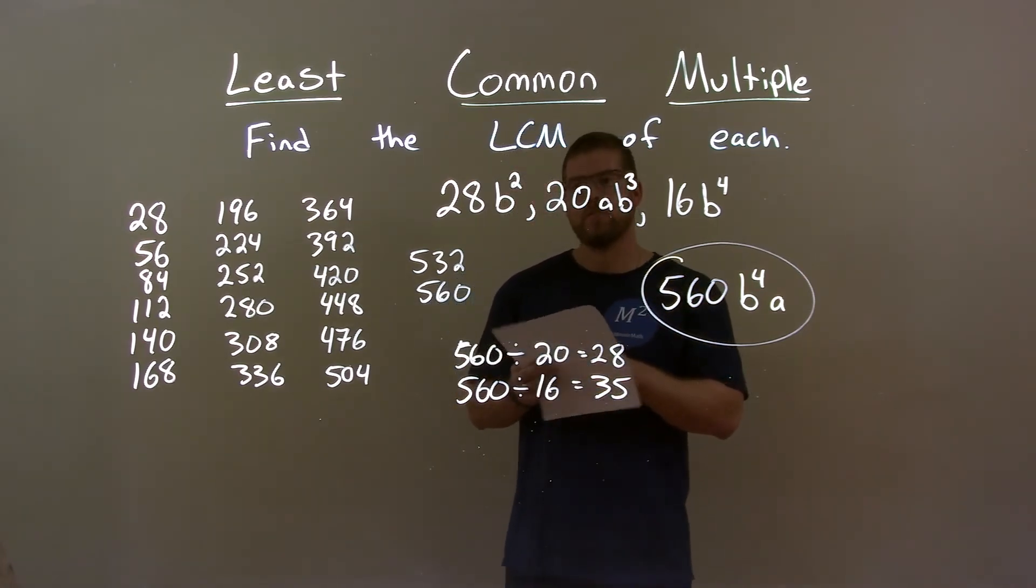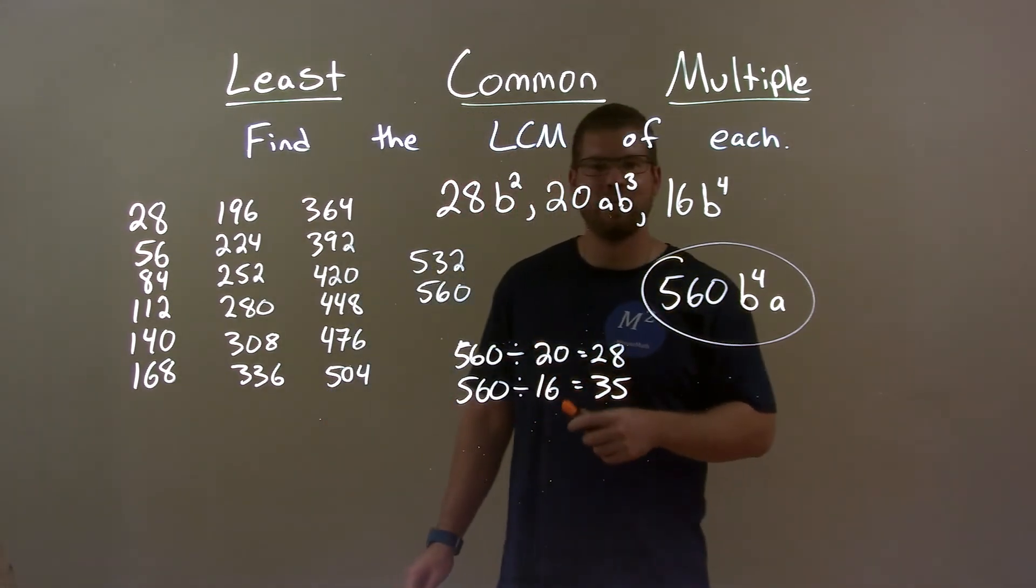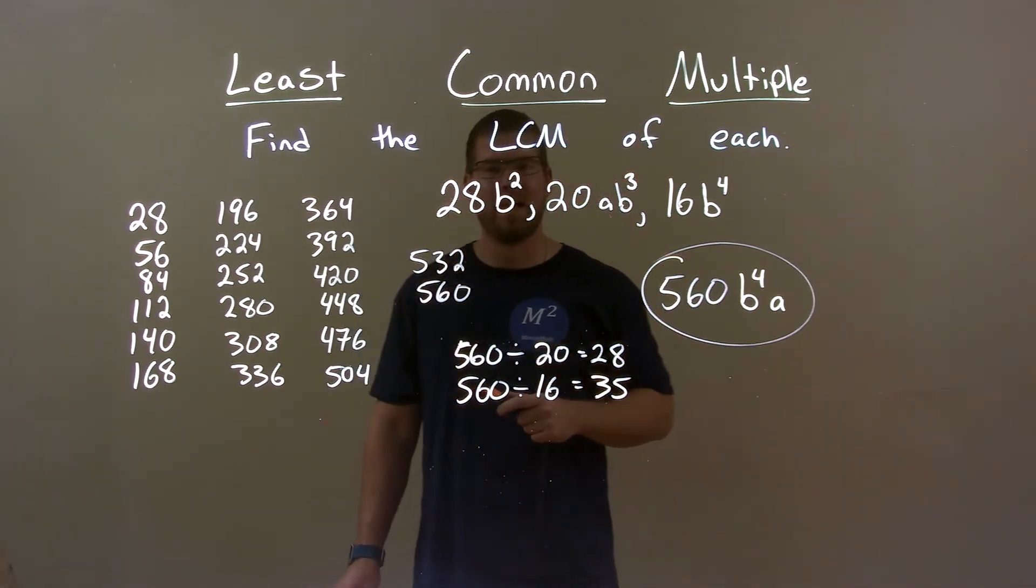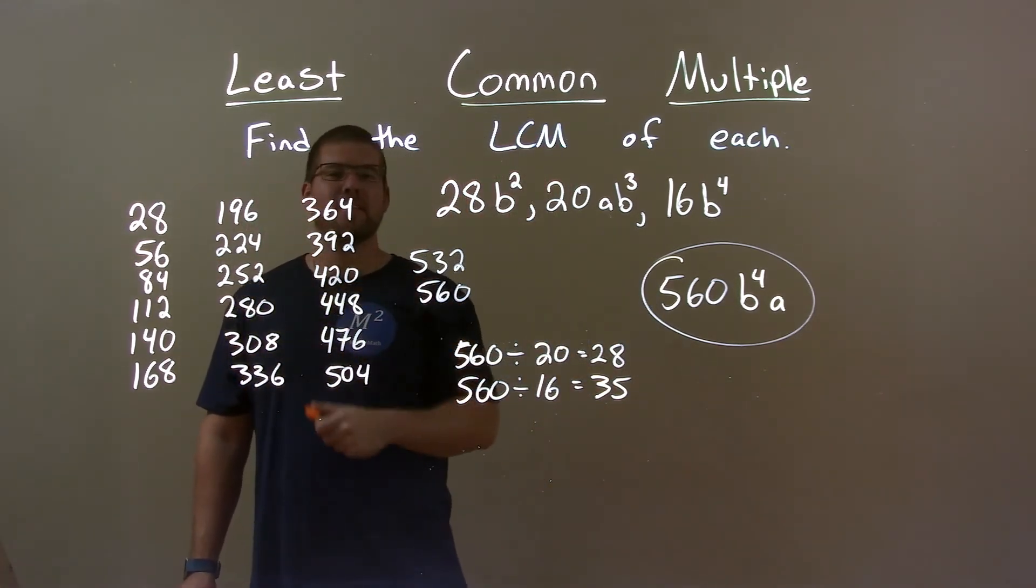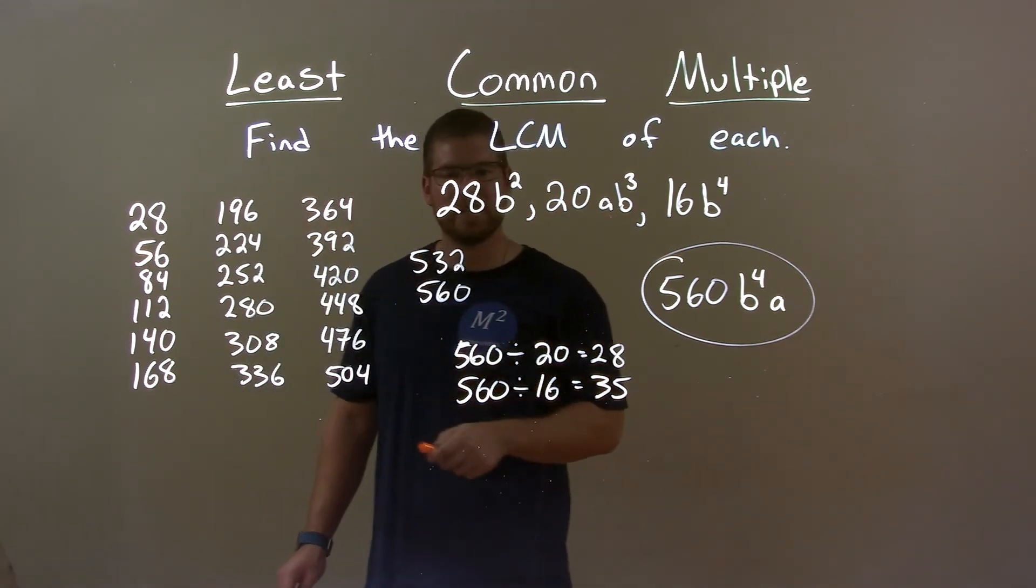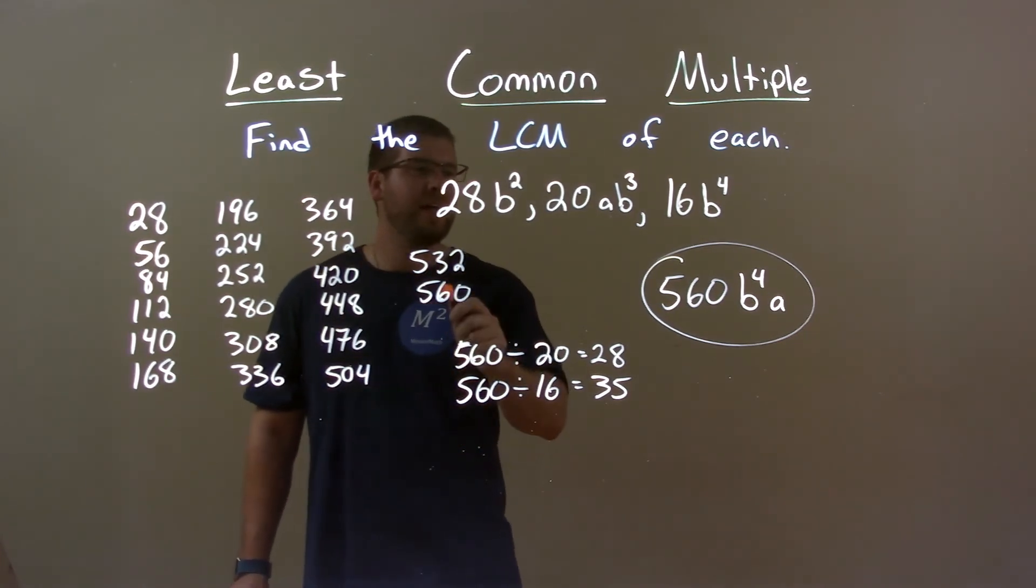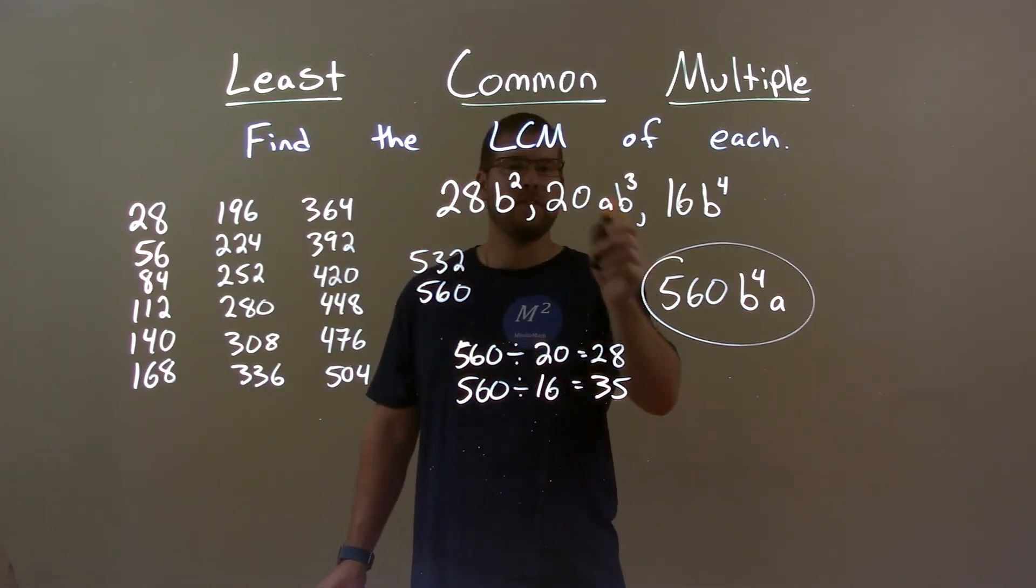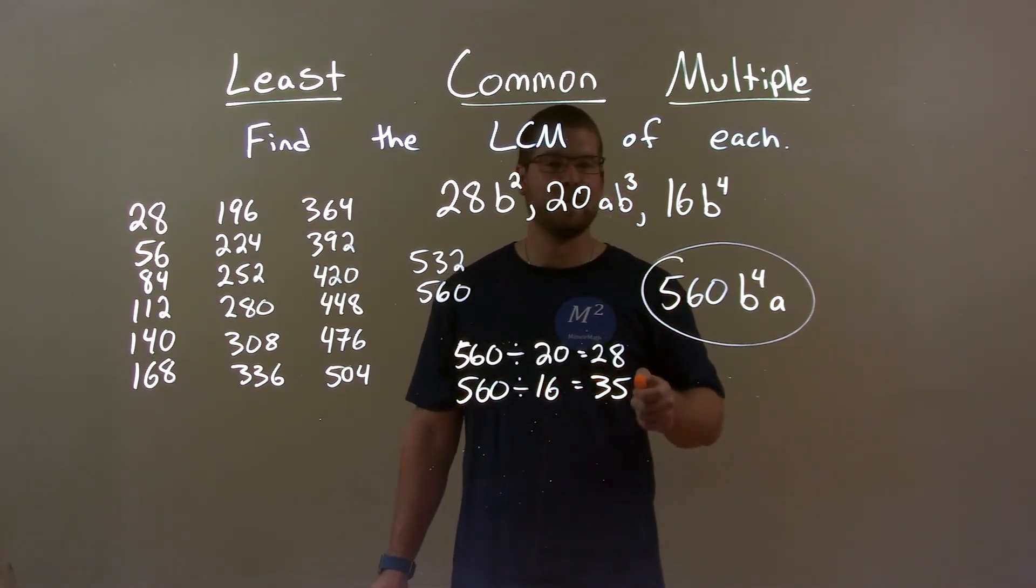Quick recap. We're given 28B squared, 20AB to the third power, and 16B to the fourth. We have to find the LCM. I go through the multiples of 28 and find the first one that's divisible by 20 and 16, which took a while, but got me to 560. Now we encompass all of our variables. So my final answer is 560 B to the fourth power times A.